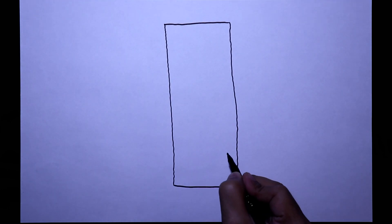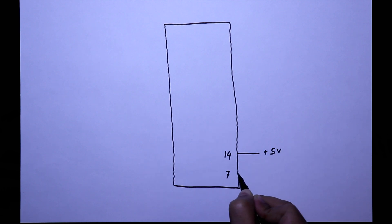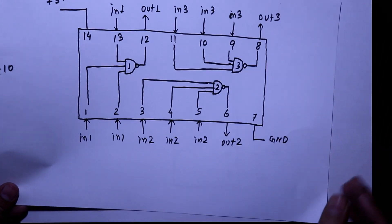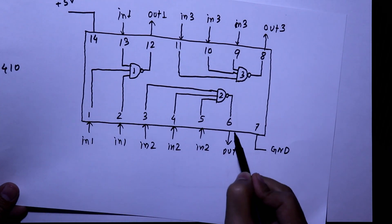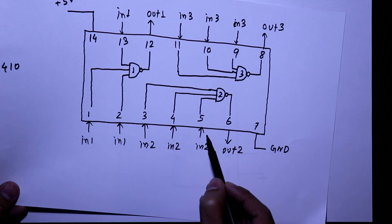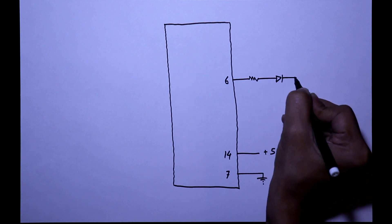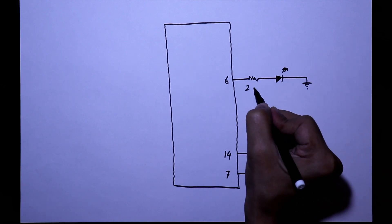Here is our IC. With pin 14 we have to connect plus 5 volt and with pin 7 we have to connect it to the ground. Pin 6 is output and 3, 4, 5 are the inputs. With the output pin we are connecting an LED and with this we have to connect a series resistor.